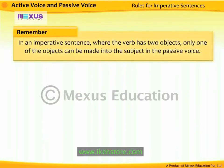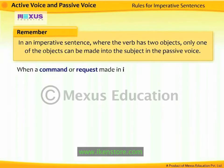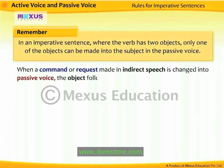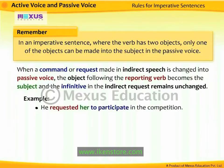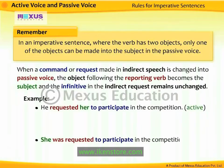Remember, in an imperative sentence where the verb has two objects, only one of the objects can be made into the subject in the passive voice. When a command or request made in indirect speech is changed into passive voice, the object following the reporting verb becomes the subject, and the infinitive in the indirect request remains unchanged. For example, 'He requested her to participate in the competition' becomes 'She was requested to participate in the competition by him.' The object 'her' follows the reporting verb 'requested' in active voice, so 'her' becomes the subject in passive voice. The infinitive 'to participate' remains unchanged.